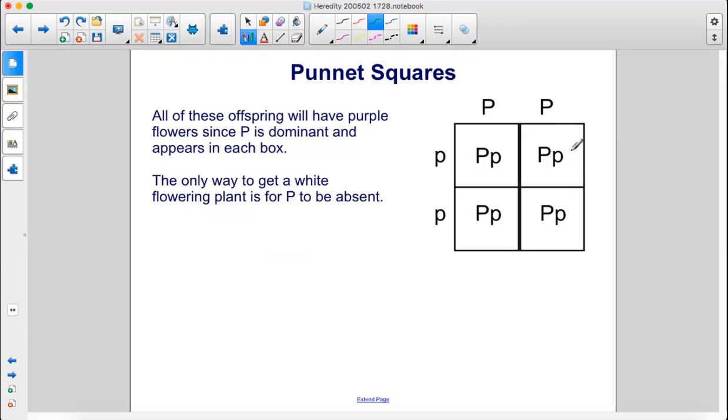All of these offspring will have purple flowers, since capital P is dominant and appears in each box. The only way to get a white flowering plant is for capital P to be absent.